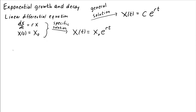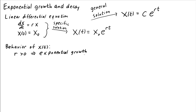We call x of t equals x₀ times e^(rt) the specific solution because it takes into account both the differential equation and its initial conditions. What happens to x of t as t gets larger — what's the behavior of the system? If r is positive, then x of t gets larger and larger as t increases, so if r is greater than zero, we get exponential growth. On the other hand, if r is less than zero, then x of t decays towards zero as t gets larger and larger, because we get e to the negative of a very large number, so it gets smaller and smaller — we get exponential decay.